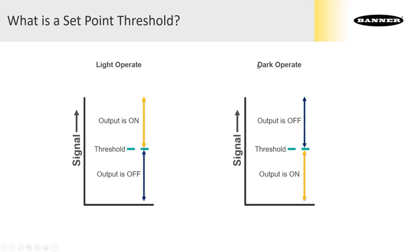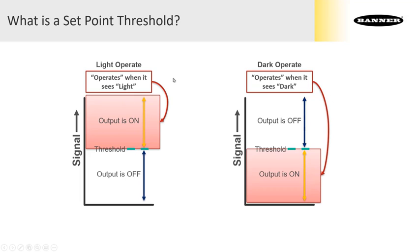If the amplifier is in dark operate mode, the output is on when the amplifier sees less light than the threshold and off when it sees more light than the threshold. So in light operate, the output is operating when it sees the light condition, and in dark operate, the output is operating when it sees the dark condition.